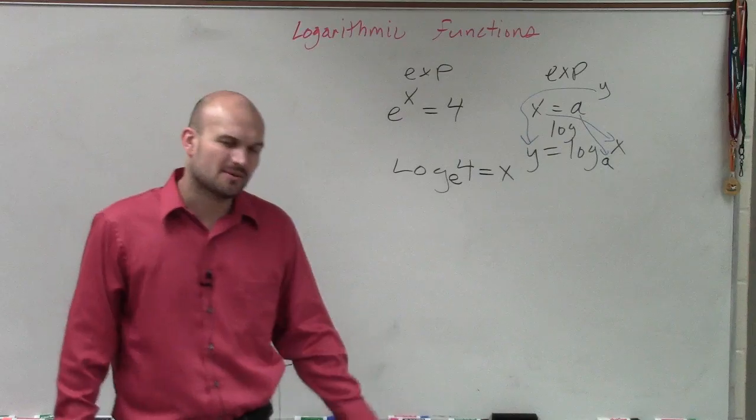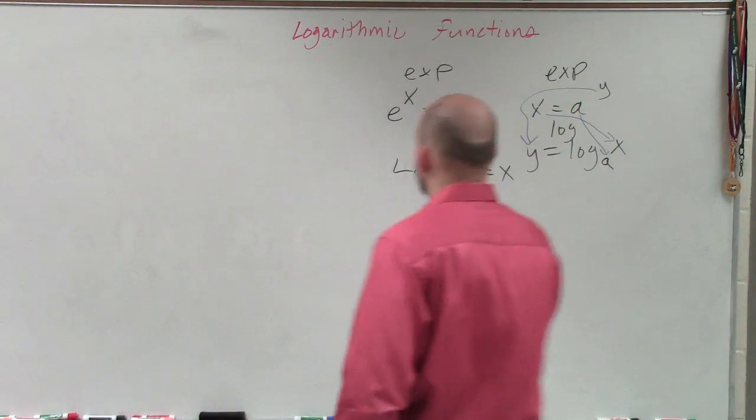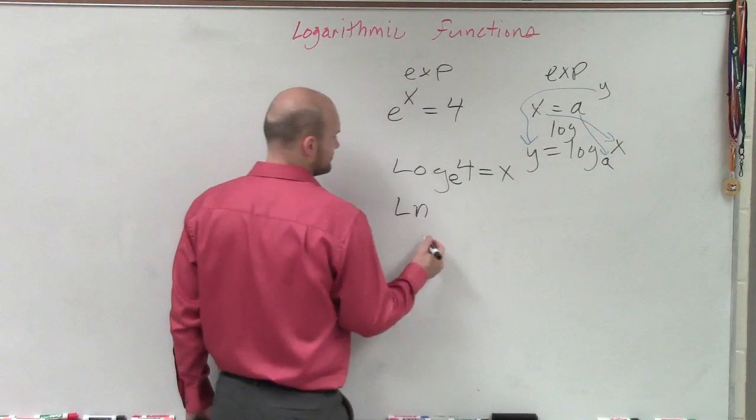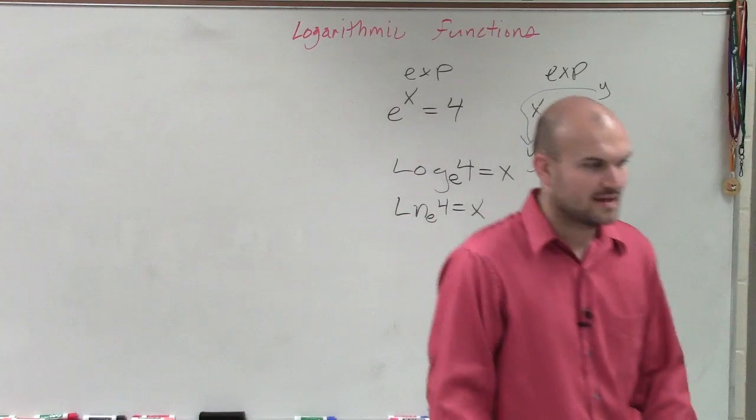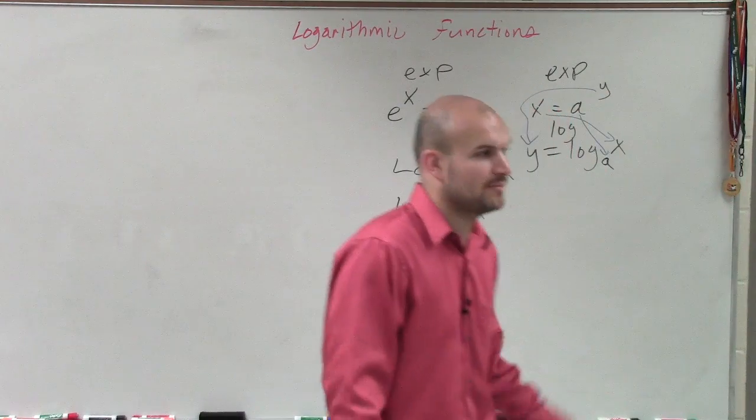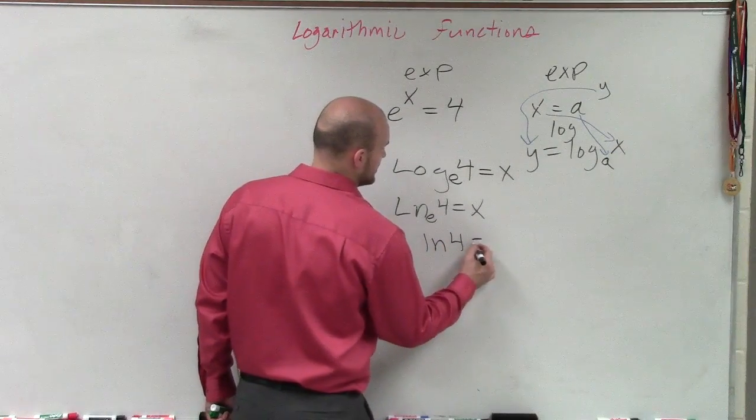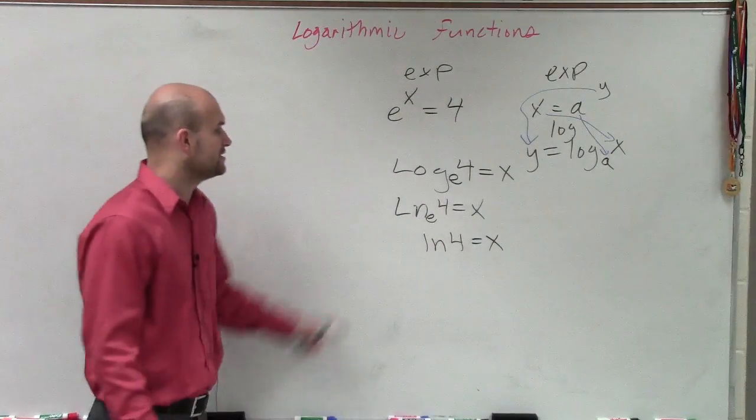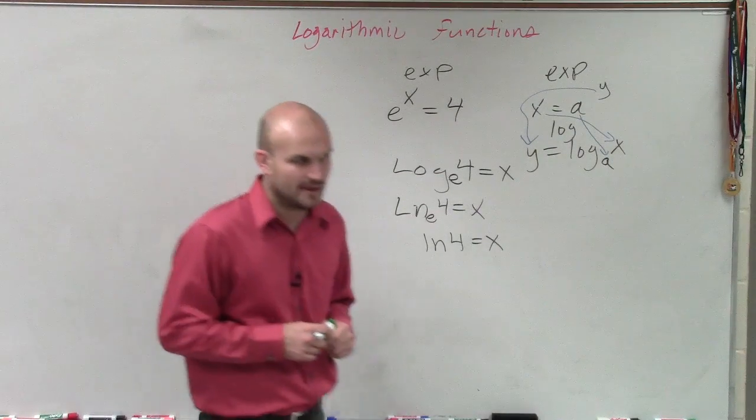All right? Now, a couple things just so you guys know. When we have log base e, we call that natural logarithm. Base e of 4 equals x. And all natural logarithms, ln, which we call it the natural logarithm, is only we're going to only write that when we have a base e. So therefore, it's just ln of 4 equals x. We don't need to write log e or ln of e. We already know that it's going to be a base e.